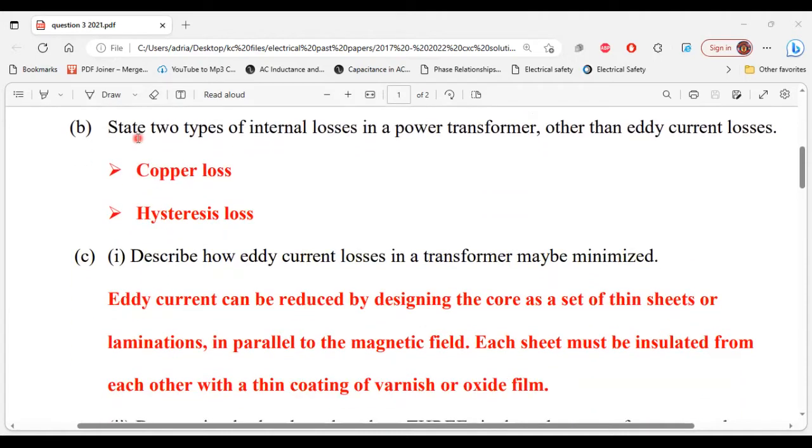Let's move on to part B now. It says state two types of internal losses in a power transformer other than eddy current losses. All right, so the two types of losses in a transformer other than eddy current losses are copper loss and hysteresis loss.